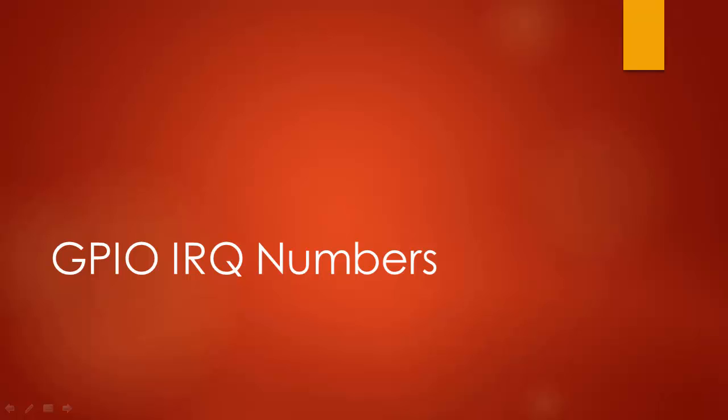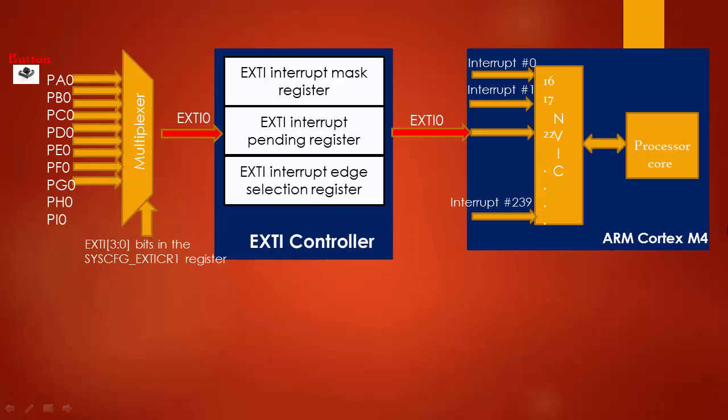Now let's understand what IRQ numbers are. This is a generic concept applicable to any microcontroller. Let's take an example of this simplified feature of a button interrupting the processor.